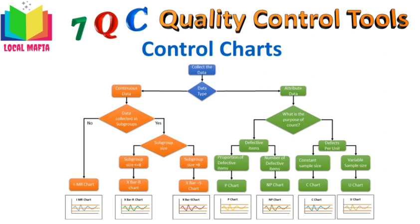If an item is complex — like a television set — it does not make sense to simply characterize it as defective or non-defective, because a television may have many scratches on its surface but that hardly makes it fully defective. The real issue is how many defects are on the unit. For defects per unit, we use the C chart, which plots the number of defects over time (the area of opportunity must remain the same), and the U chart, which plots the number of defects per inspection unit over time.